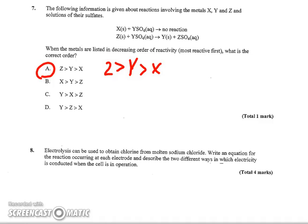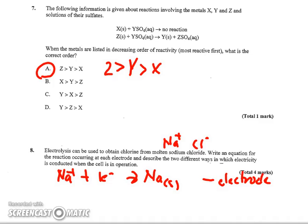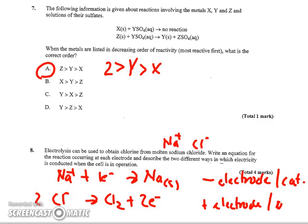Number eight says electrolysis could be used to obtain chlorine from molten sodium chloride, writing an equation for the reaction occurring at each electrode. So molten sodium chloride, you should realize, is going to give you Na+ and Cl- ions. So Na+ is going to pick up an electron to become Na solid. It's going to be attracted to the negative electrode. And that's going to be the cathode since reduction is going to be taking place there. Chlorine, on the other hand, Cl-, is going to give up its electron to form chlorine gas. And since chlorine gas is diatomic, I need two chlorine ions to give up two electrons. That's going to be attracted to the positive electrode. And that's the oxidation. So that would take place at the anode.